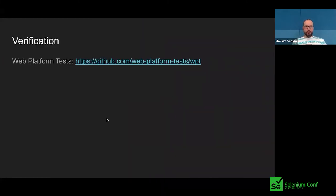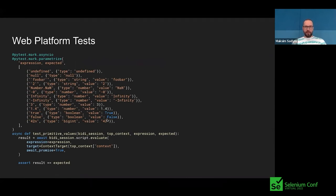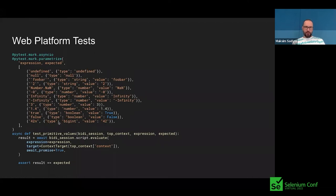For verification we use Web Platform Tests — you can find a link here. Basically it's a set of Python tests, and there are lots of them — over 600 related to WebDriver BiDi. Here is a small example of a test; it's quite a trivial one. You see there are lots of pairs of values: we call script evaluate with a given expression and verify that, for example, if you evaluate and return undefined, the return value is properly serialized to type undefined, or if you send a BigInt it's serialized as BigInt. That's a real example of one of the WPT tests.